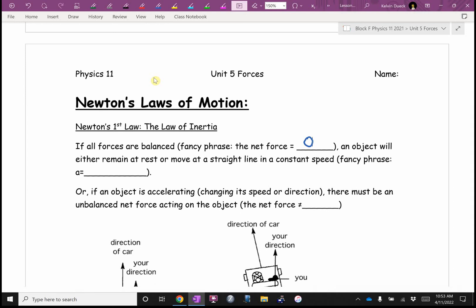If you know that all the forces are balanced, if the net force is zero, an object will either remain at rest, if it's already at rest, or move in a straight line at a steady speed. A fancy phrase, if the net force is zero, A is zero. You can take that to the bank.